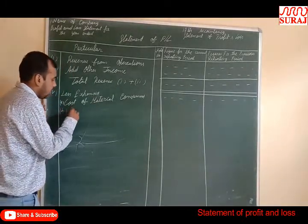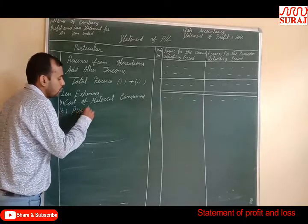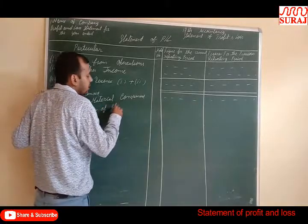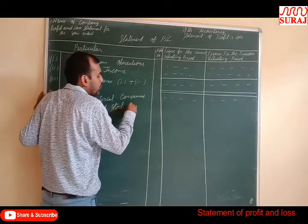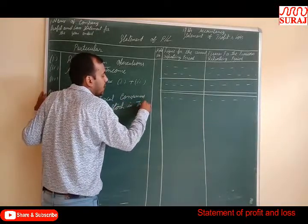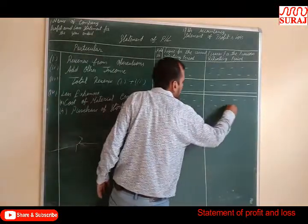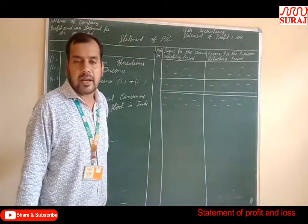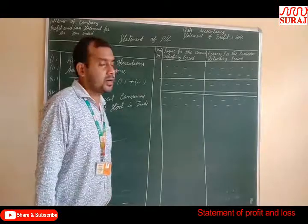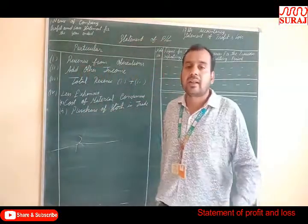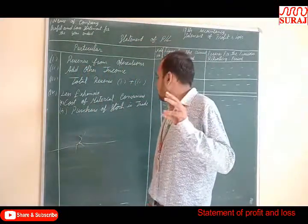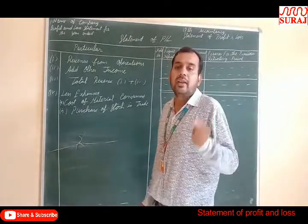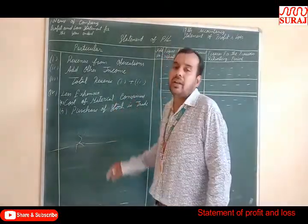B: Purchase of Stock in Trade. Goods which are purchased for retail purposes are included in Purchase of Stock in Trade. If any semi-finished goods are purchased for the production of other goods, then they are covered under Cost of Material Consumption.